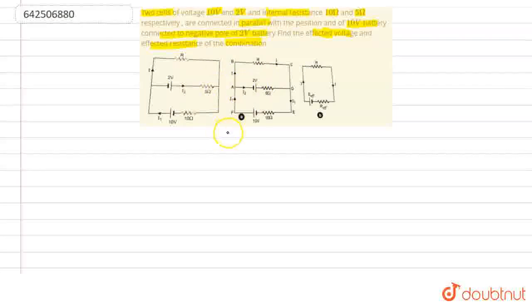So, we can find this by using parallel combination formula, which is E effective equals E1 R2 plus E2 R1 divided by R1 plus R2.